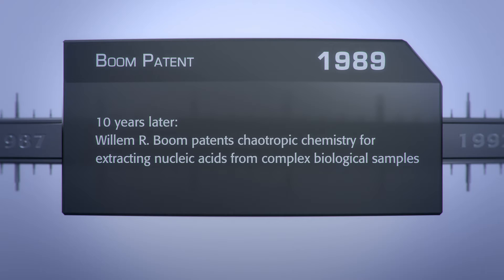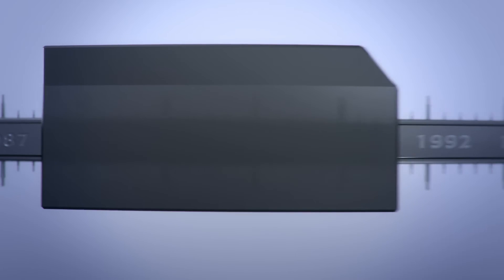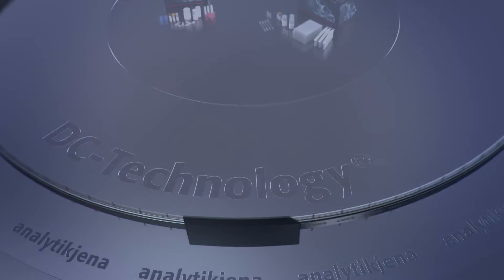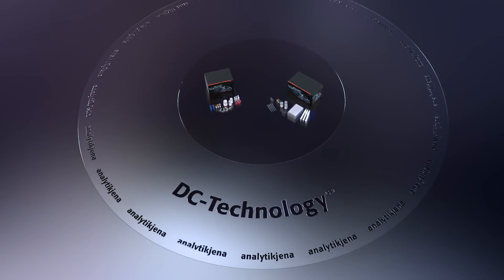In 2005, Analytic Jena developed a new innovative method to isolate nucleic acids. The patent for DC technology was granted in 2014. For users, nothing has changed in terms of handling. The routines remain the same.